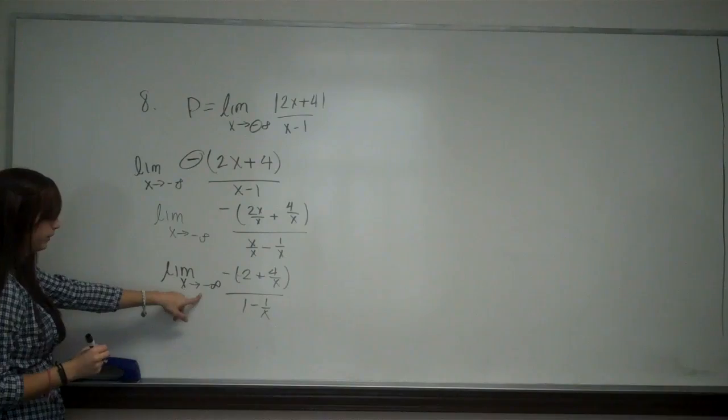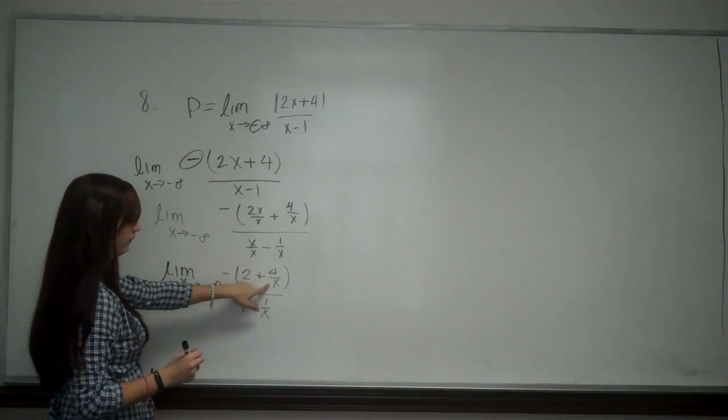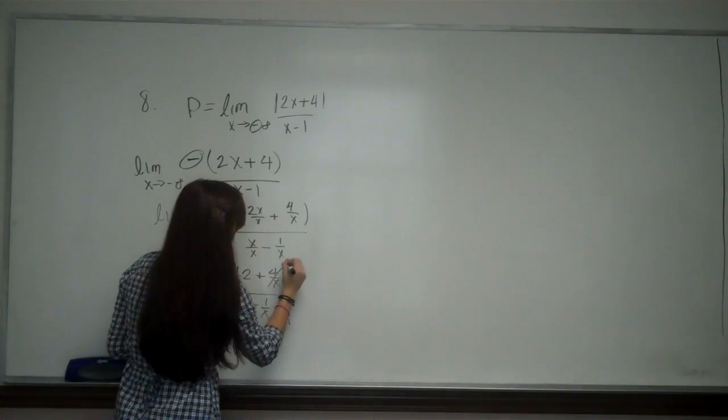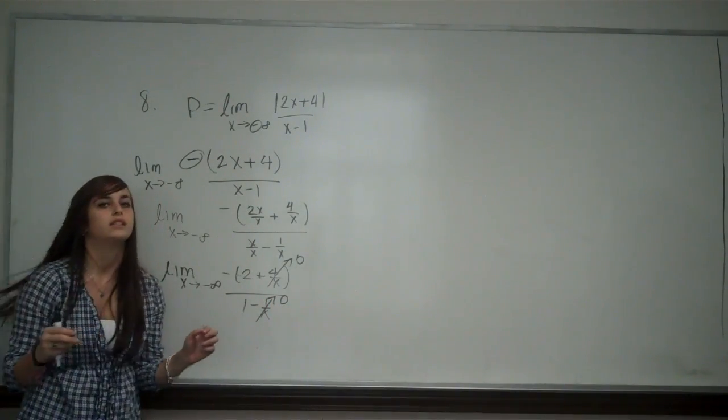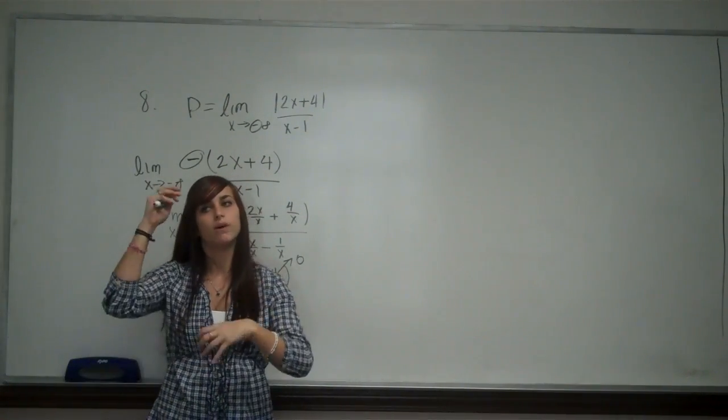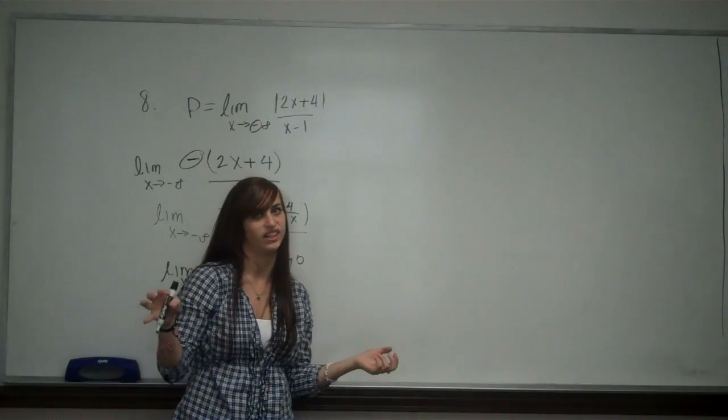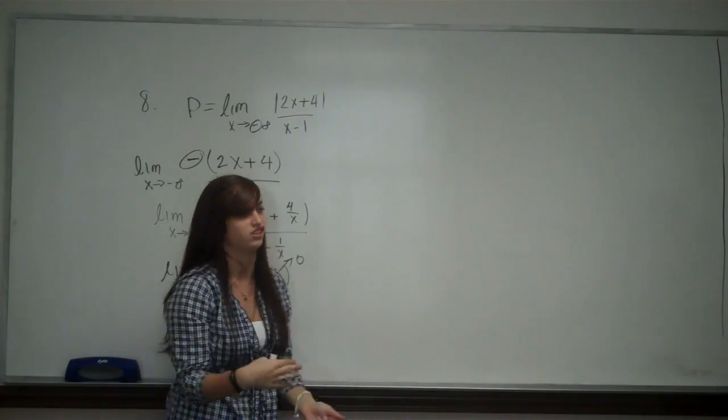So now, as X approaches infinity, when I have 4 divided by infinity, this is going to go to 0, and this is going to go to 0. Because if I divide by a very, very big number, a smaller number divided by a really big number is going to be a really small number that's close to 0.